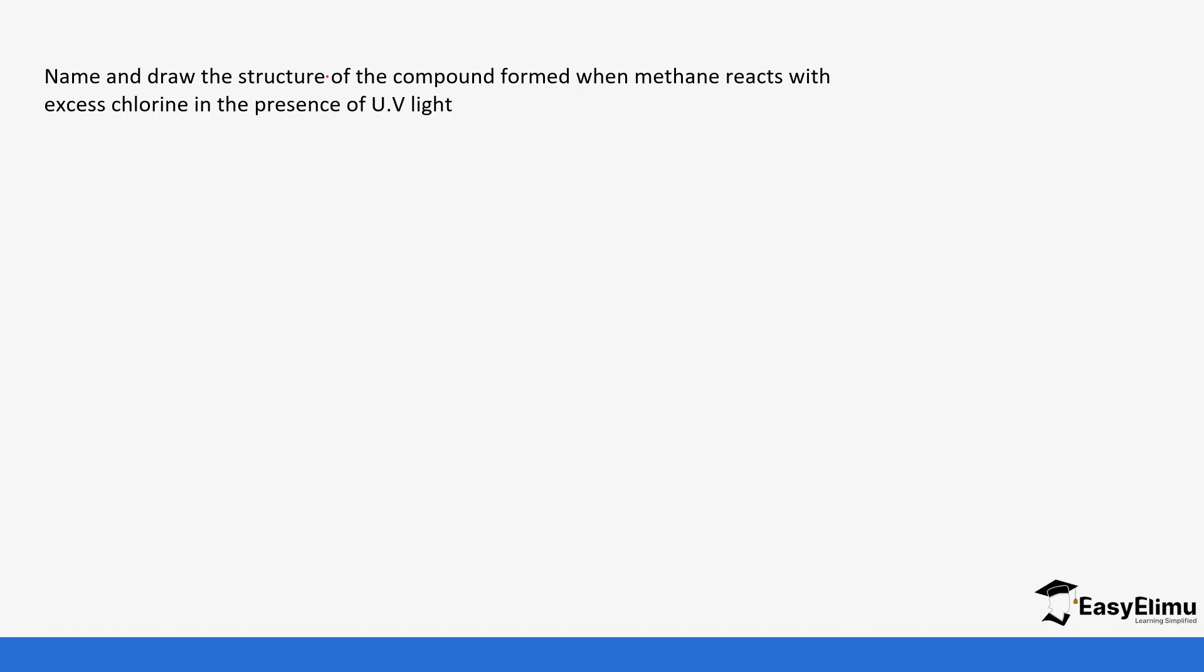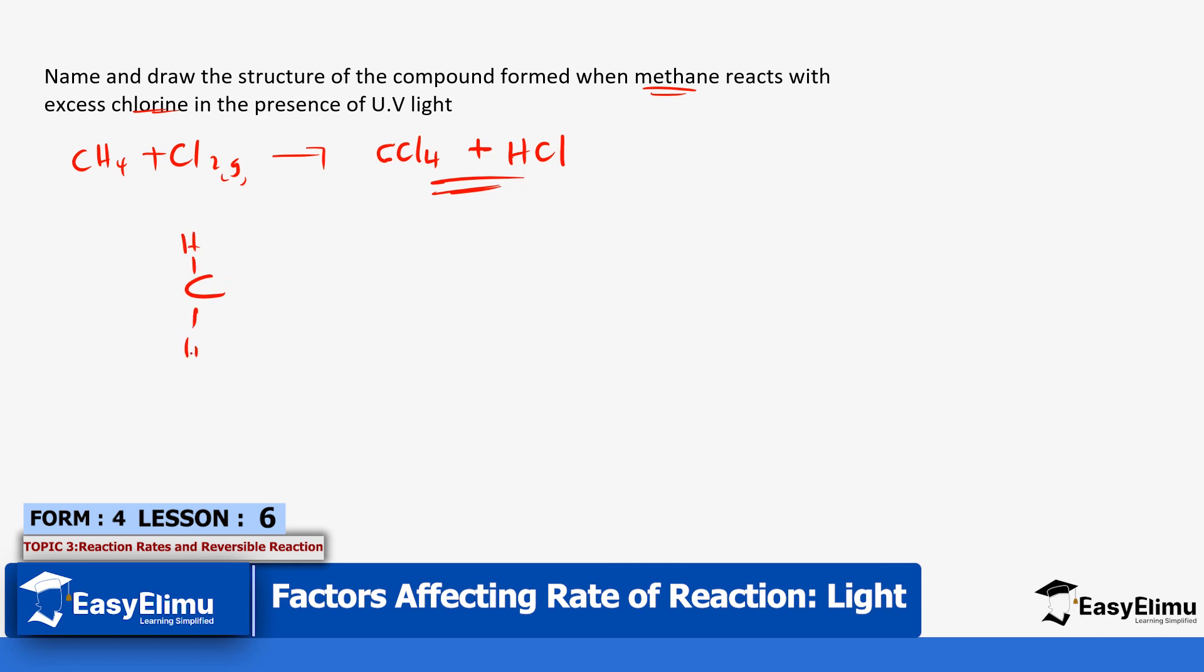Name and draw the structure of the compound formed when methane reacts with excess chlorine in presence of UV. We have methane which is CH4 reacts with chlorine gas. If it's excess it means all the hydrogens have been replaced to form tetrachloromethane plus hydrogen chloride. This is the final product.